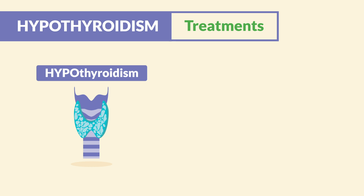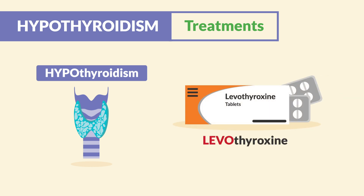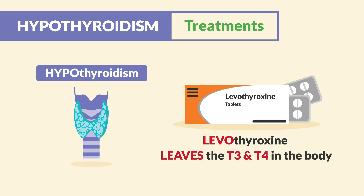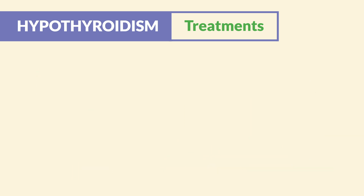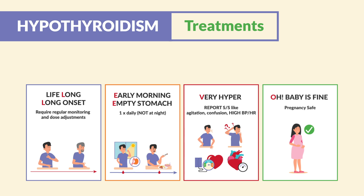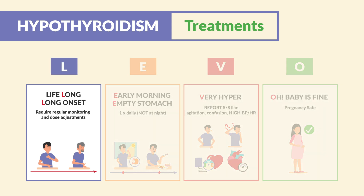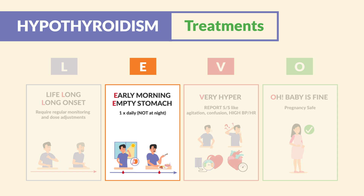For treatment of hypothyroidism, there's one main drug you'll need to know for all your exams, and that is levothyroxine. Simply think it leaves thyroid hormones T3 and T4 in the body. To remember the key points of levothyroxine, we use the memory trick LEVO. L is for lifelong therapy and long onset — there is no cure when replacing hormones, so it requires regular monitoring and dose adjustments to ensure therapeutic range. E is for early morning and empty stomach — always tell clients to take it first thing in the morning, daily, before breakfast, and never at night, because levothyroxine will leave T3 and T4 in the body, increasing energy and making it hard to sleep.